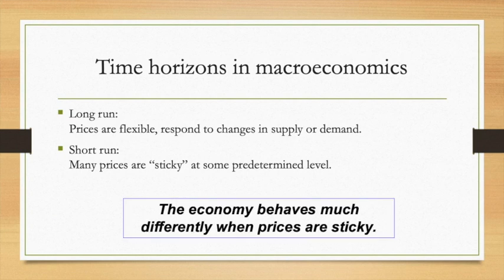Before we move to the actual model, in macroeconomics we will be discussing what happens to the economy in the short run and in the long run. To make our analysis simpler, we assume that the short run is the period in which many prices are sticky and at some predetermined level. In the long run, prices become flexible and can change, and the economy behaves differently in both periods.